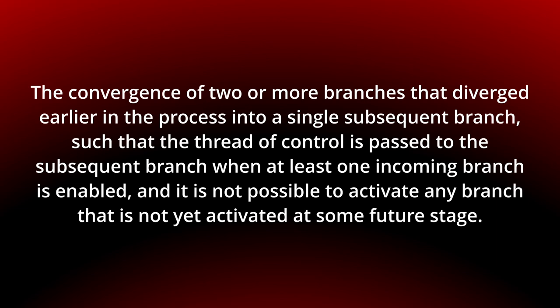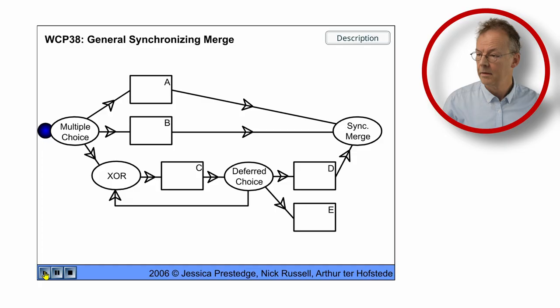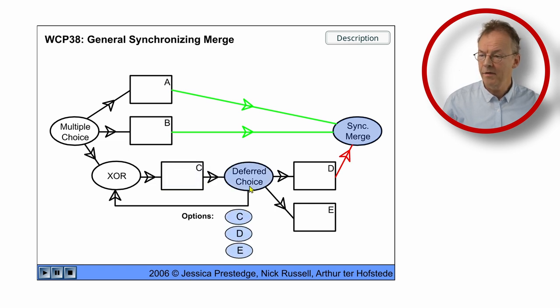You can see the behavior in the original flash animation. We start with the multiple choice. We choose A, B and C tokens come out and let's say we finish A, we finish B and now we finish C and now we have the deferred choice.